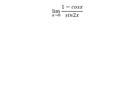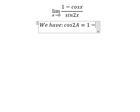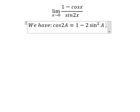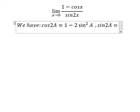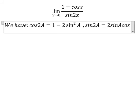We have the formula in here: cosine 2A equals to 1 minus 2 sine squared A, and sine 2A equals to 2 sine A cosine A.